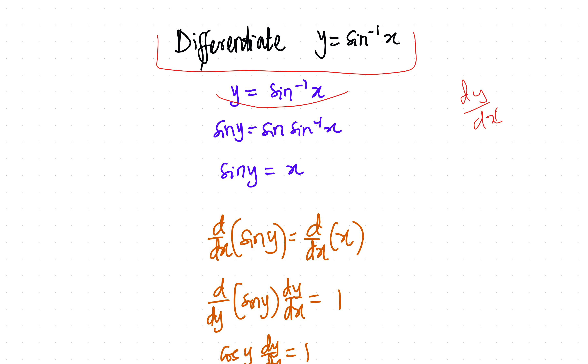So of course, since you have y equals sine inverse of x, the way to undo inverse is to take the sine of both sides. So you have sine of y equals sine of sine inverse of x. So that this cancels this, and then you have sine y equals x. And that is how we got to this point.